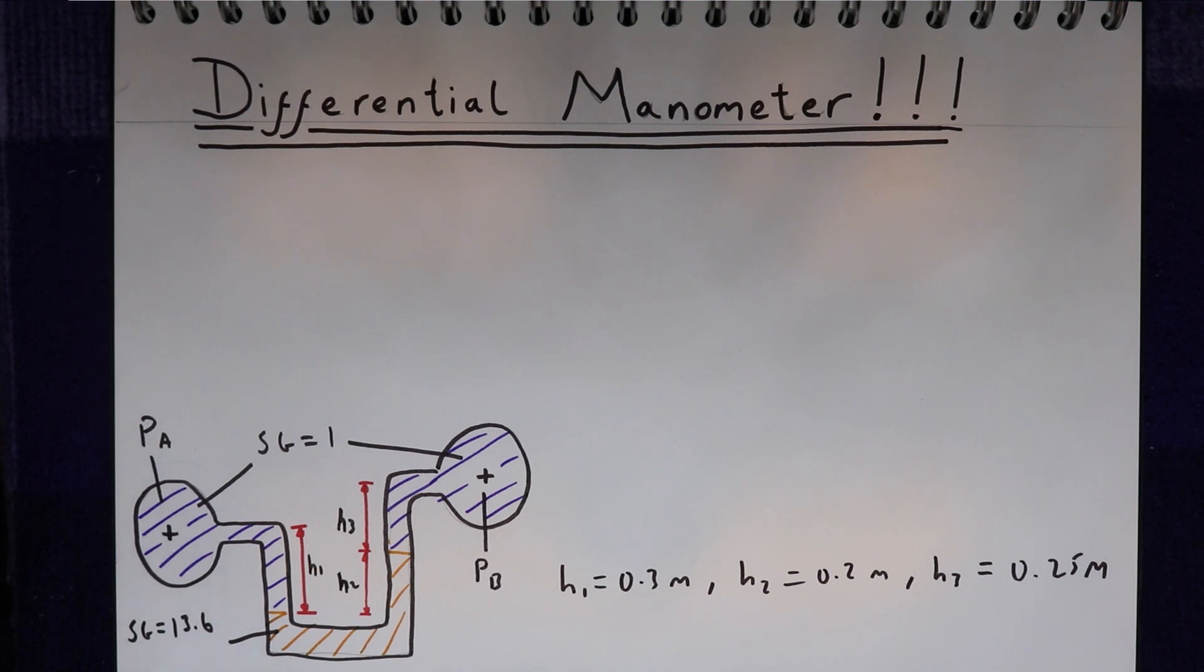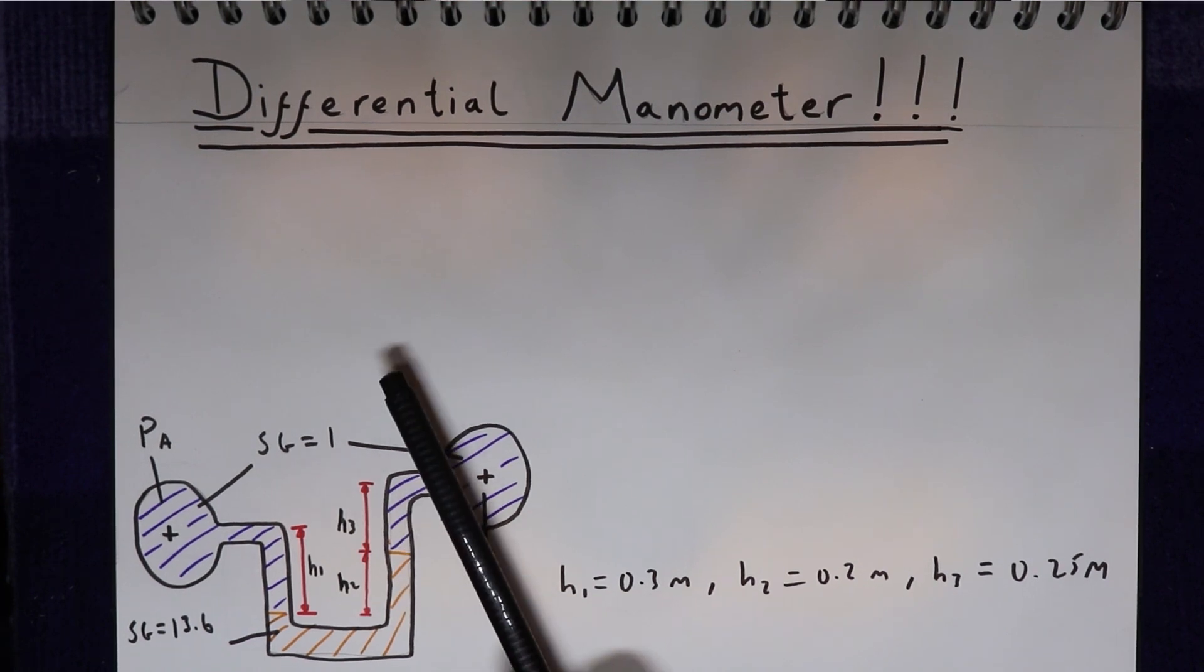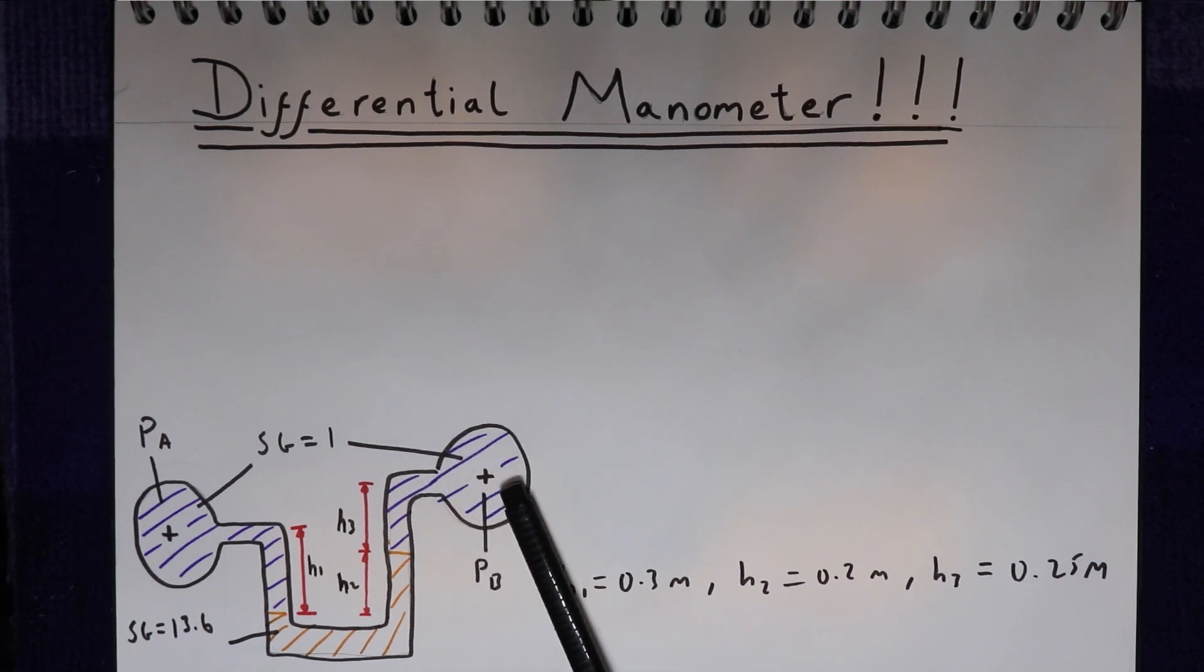In this video we're looking at something called a differential manometer. A differential manometer is very similar to the U-tube manometer we looked at in the previous video. The only difference being that on this side of the U-tube, instead of the manometer being open to the atmosphere, it's connected to a second pipe.